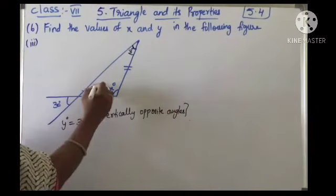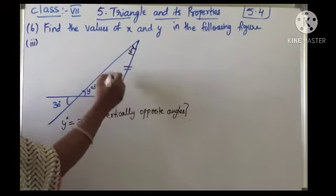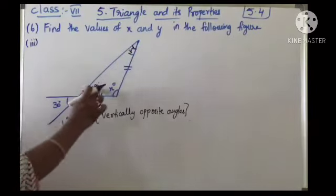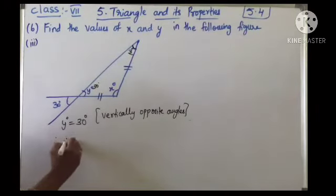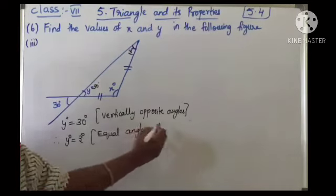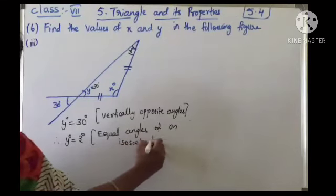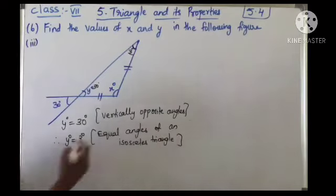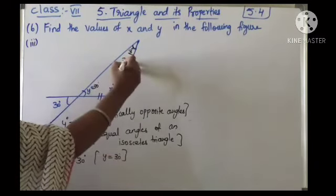Now y is 30. These two sides are equal, so it is an isosceles triangle. The opposite angles of equal sides are equal — that is, angle y equals angle z. Equal angles of an isosceles triangle. So z is nothing but 30 degrees, because y is 30.